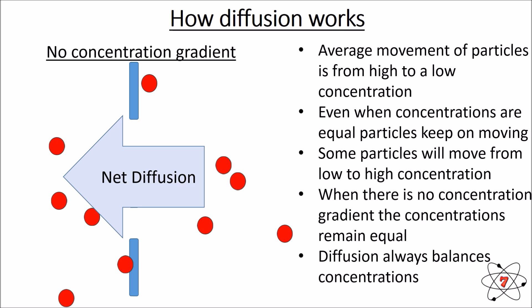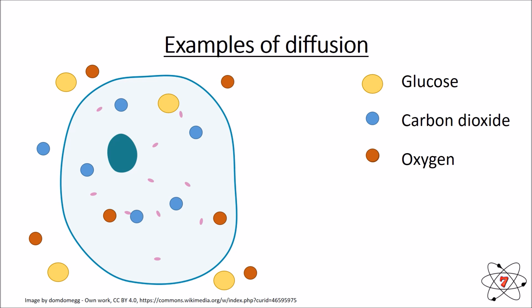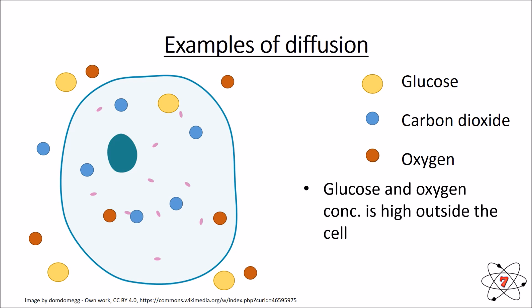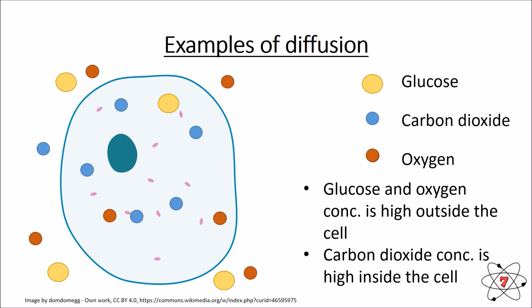Diffusion always balances the concentrations, making sure you have equal concentrations on both sides of the membrane. Looking at an example: we've got a cell with three chemicals involved in respiration — glucose, carbon dioxide, and oxygen. Outside the cell there are more glucose molecules than inside, so there's a low concentration of glucose in the cell and a high concentration outside. There's more carbon dioxide in the cell than outside. There's more oxygen outside the cell than inside.